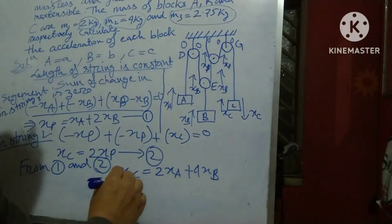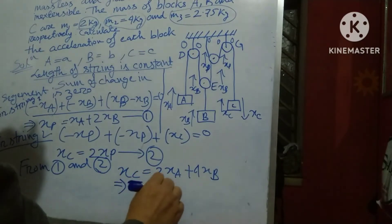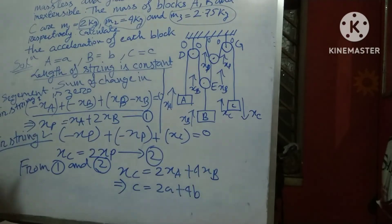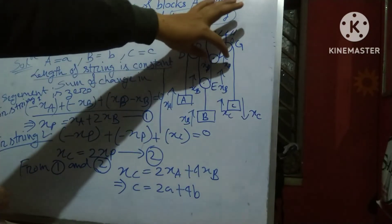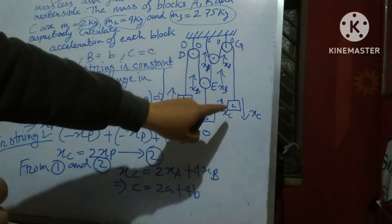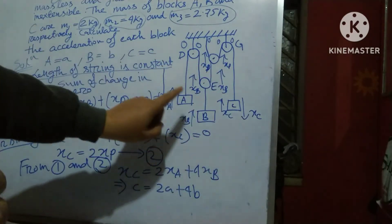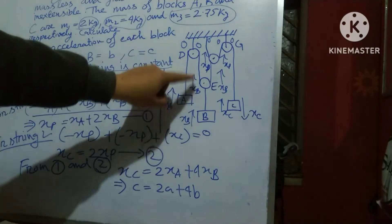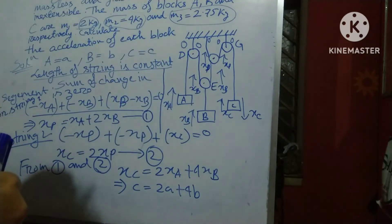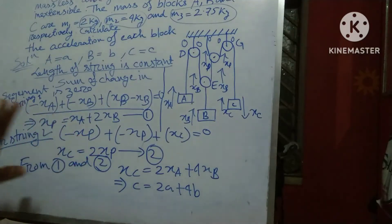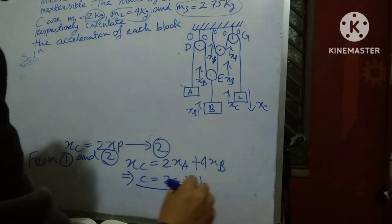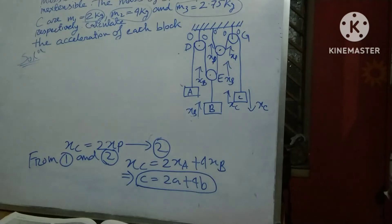After taking the derivative, we see that c equals 2a plus 4b. According to the diagram, xP and xP are on this side and xC is on the other side, so 2xP equals xC. And xA is this side while xP is the other side. This relationship c equals 2a plus 4b is very very important.